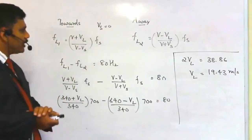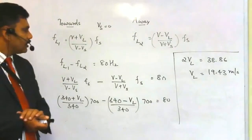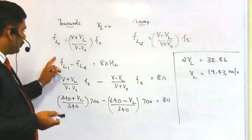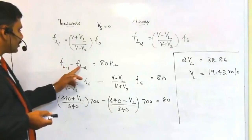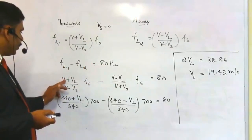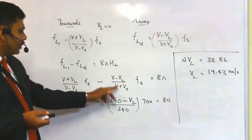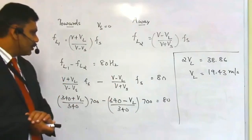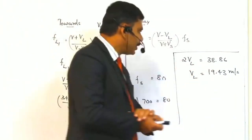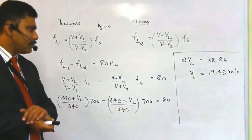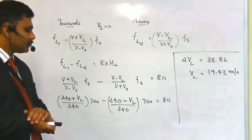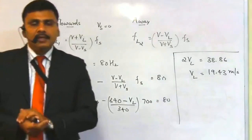In summary, there are two cases: first, the listener moving towards the source, and second, the listener moving away from the source. From the question, the difference in frequency heard by the listener is 80 Hz. Putting this into the equation and substituting values gives 2VL = 38.86, so VL = 19.43 meters per second. This is the Doppler effect Part 1.